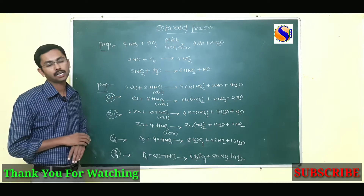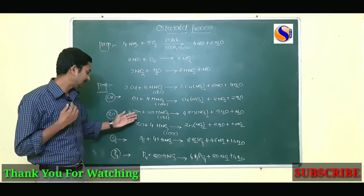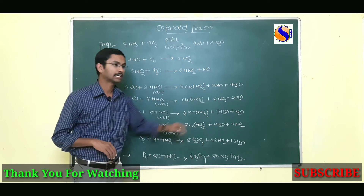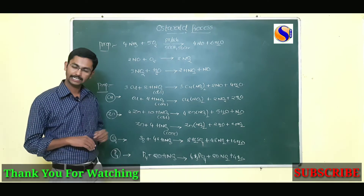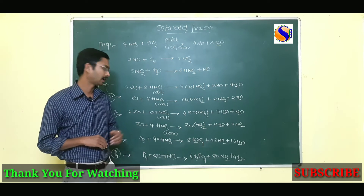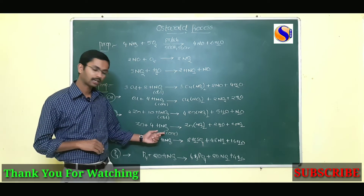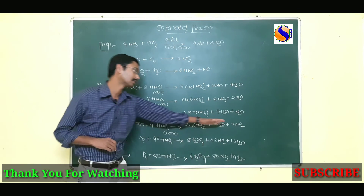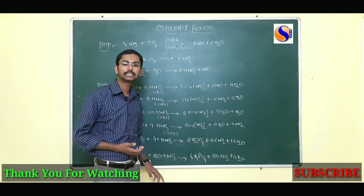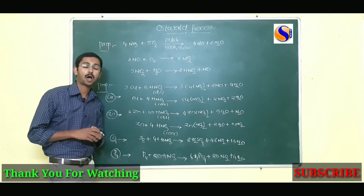Now we are discussing the properties of nitric acid. Nitric acid reacts with copper, zinc, sulfur, and phosphorus. Dilute HNO₃ forms nitric oxide with copper; concentrated HNO₃ forms nitrogen dioxide with copper. Dilute HNO₃ with zinc forms nitrous oxide, which is called laughing gas. Concentrated HNO₃ with zinc forms nitrogen dioxide. Sulfur and phosphorus form sulfuric acid and phosphoric acid with HNO₃ respectively. That is the chemical properties of HNO₃.